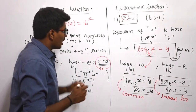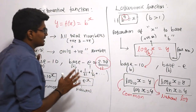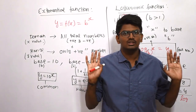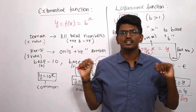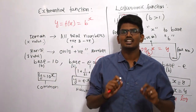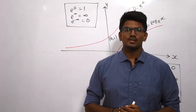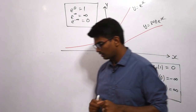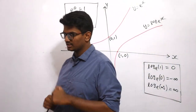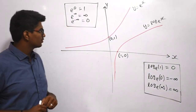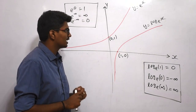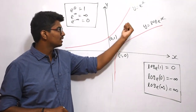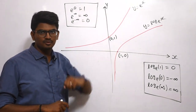Now we will see how to represent both the exponential function and the logarithm function in a graph — in a graphical manner. We can see a graph here for the logarithm and exponential curves. First we will see the exponential curve graph. y equals e power x represents this graph.